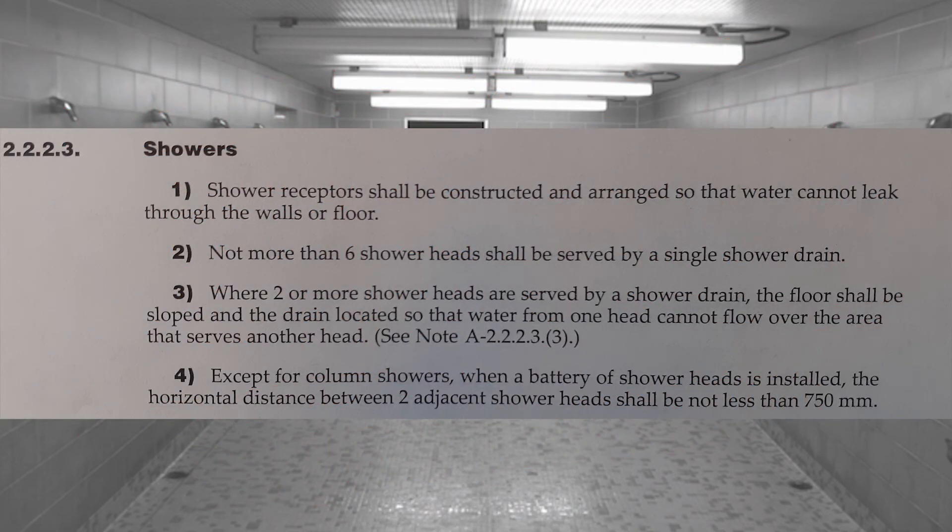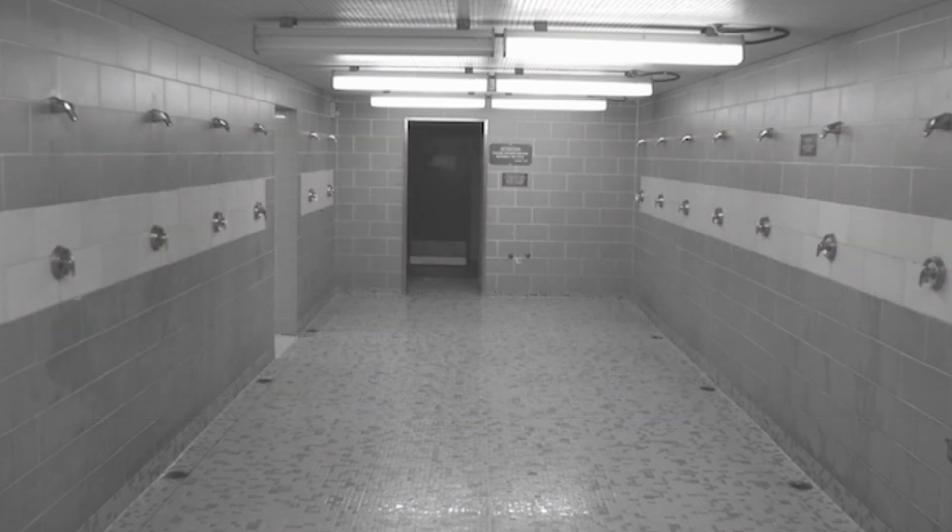Clause 2223 part 4. Except for column showers, when a battery of shower heads is installed, the horizontal distance between two adjacent shower heads shall not be less than 750 millimeters. Of course that 750 millimeters is a minimum standard and we can actually go further apart than that.